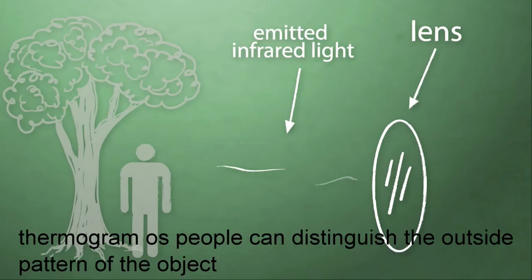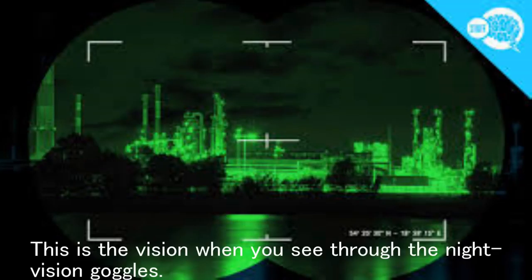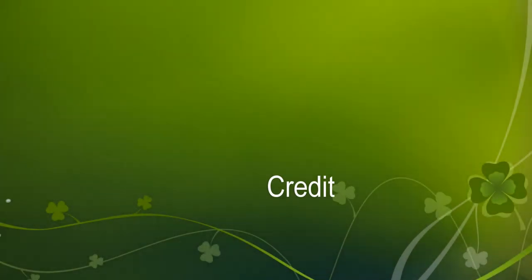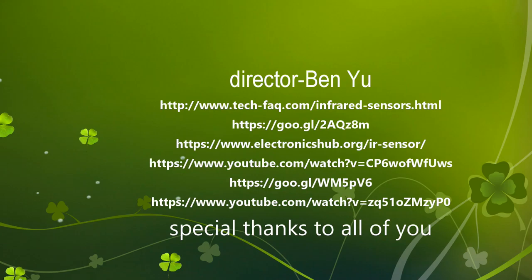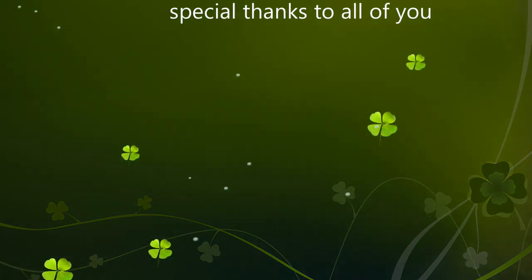The night vision goggles is also an application of the IR sensors. It works by collecting the infrared light by an object and transfer it into a temperature pattern called the thermogram, so people can distinguish the outside pattern of the object. This is the vision when you see through the night vision goggles.